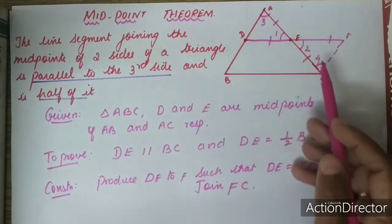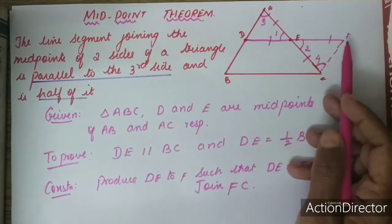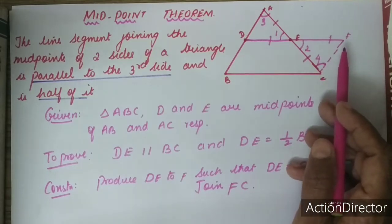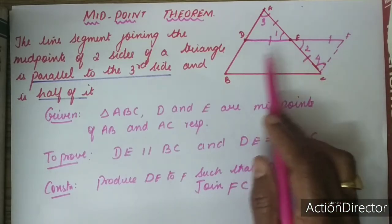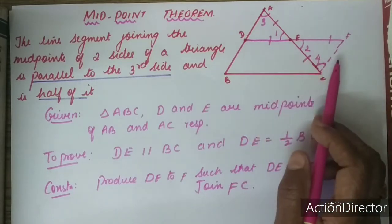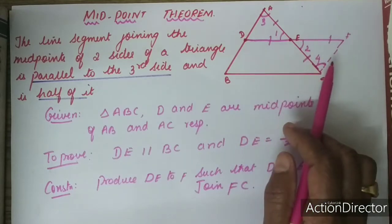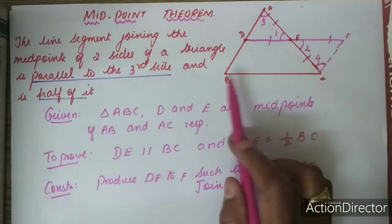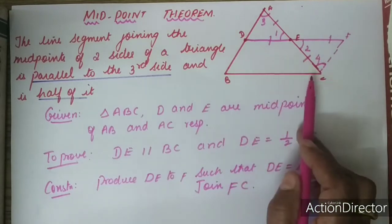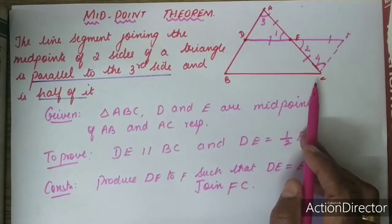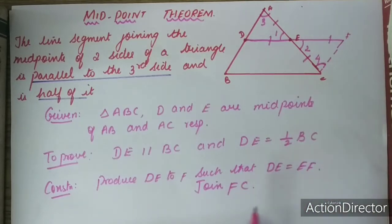Now BD is equal to CF and BD is parallel to CF, therefore BDFC is a parallelogram.